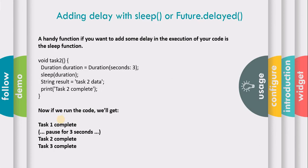Now we will learn about adding delay with the sleep method or future.delayed method. The sleep function is very handy if you want to add some delay in your code execution. The sleep function is used for synchronous programming generally. Here we have a void task function with a duration of three seconds, and we pass that duration parameter into the sleep function.